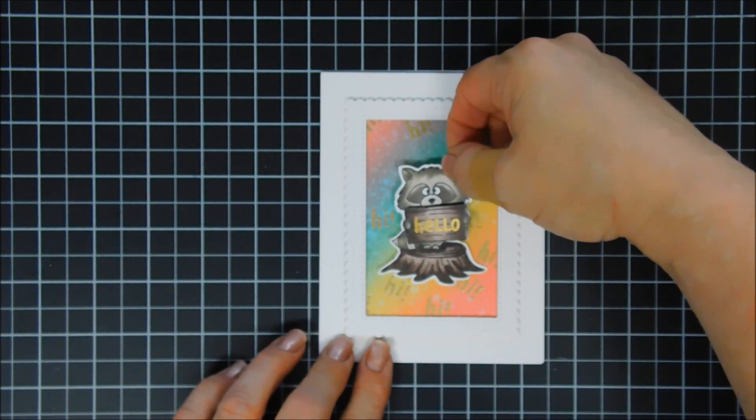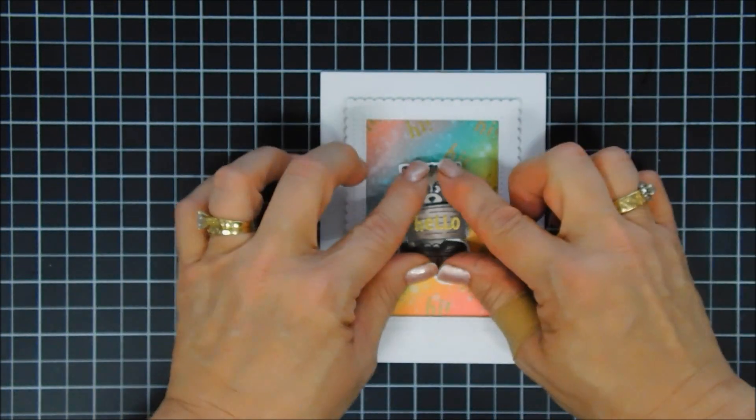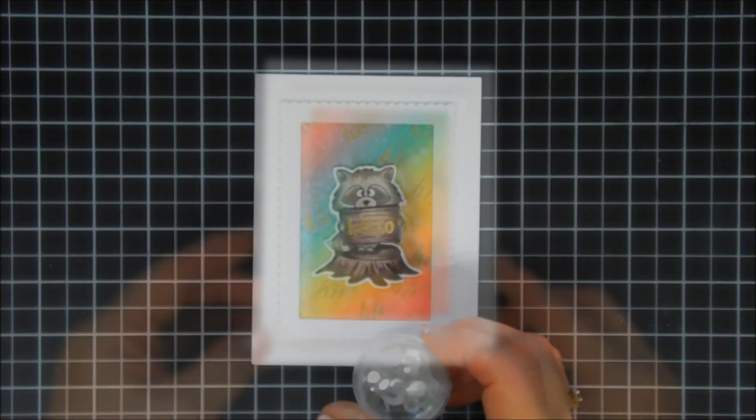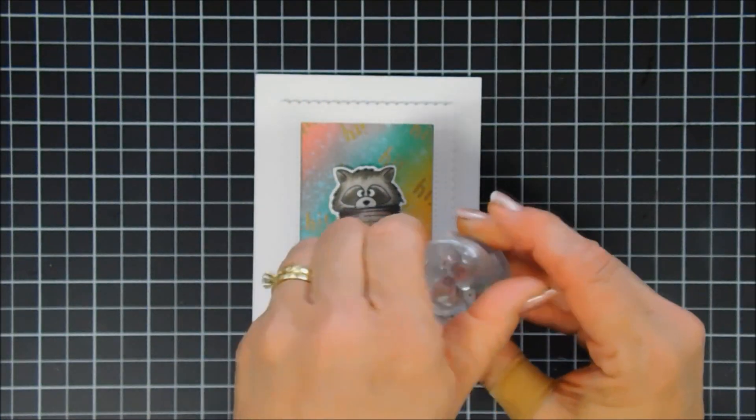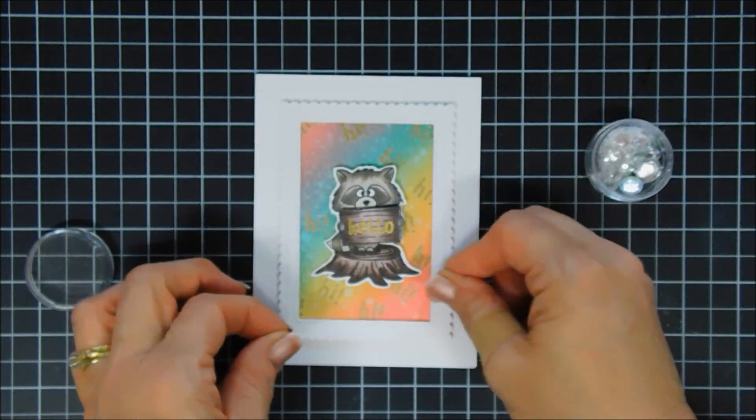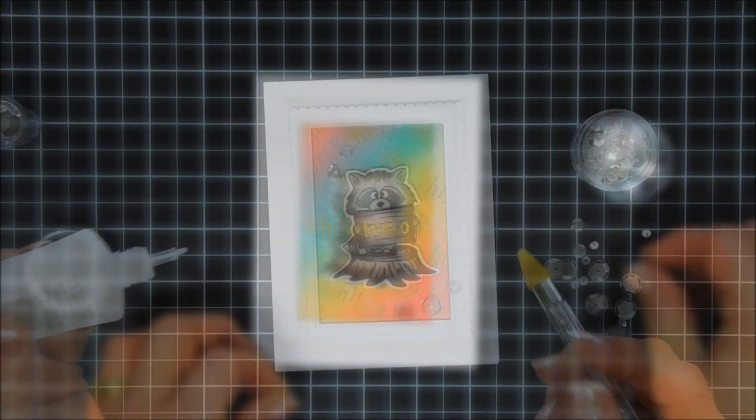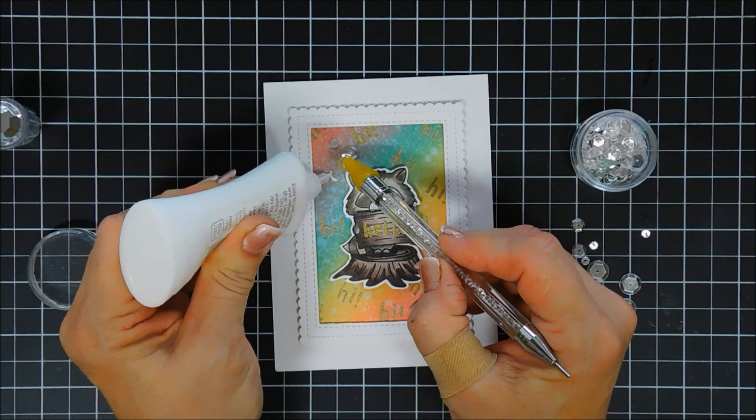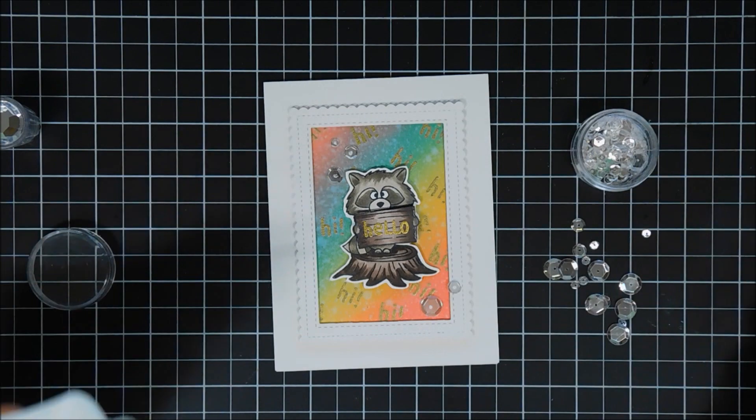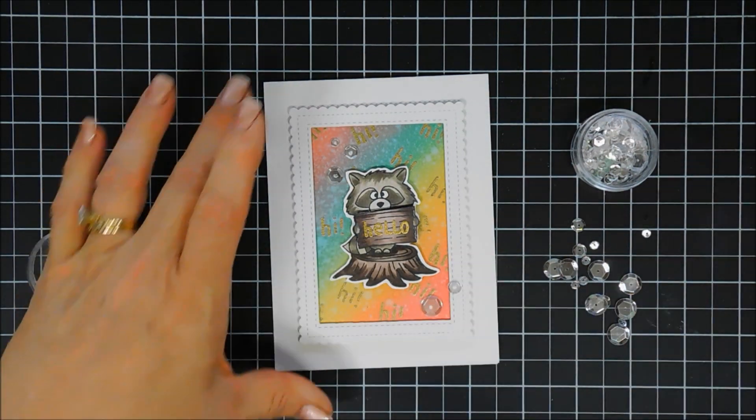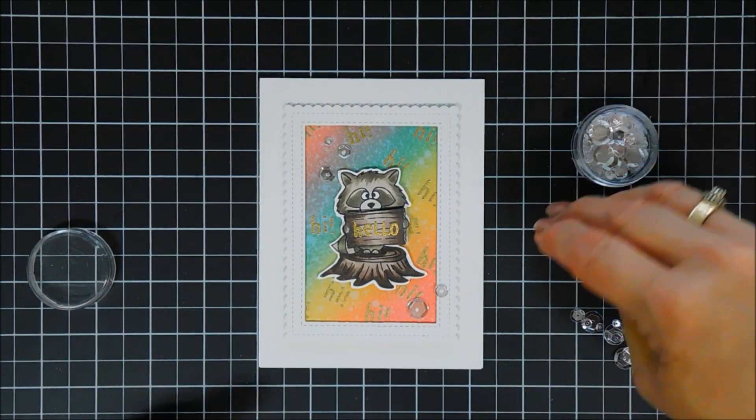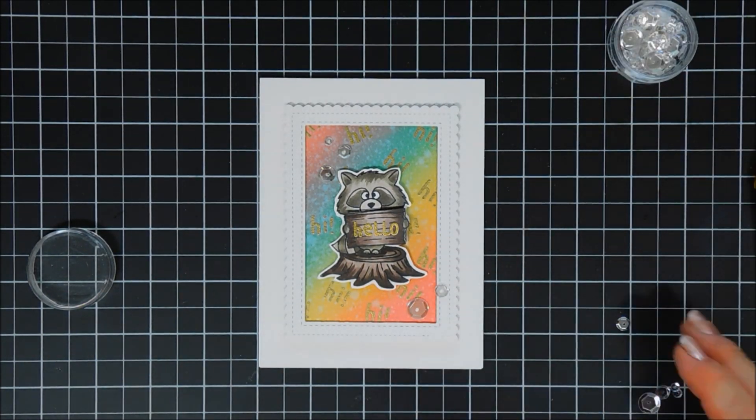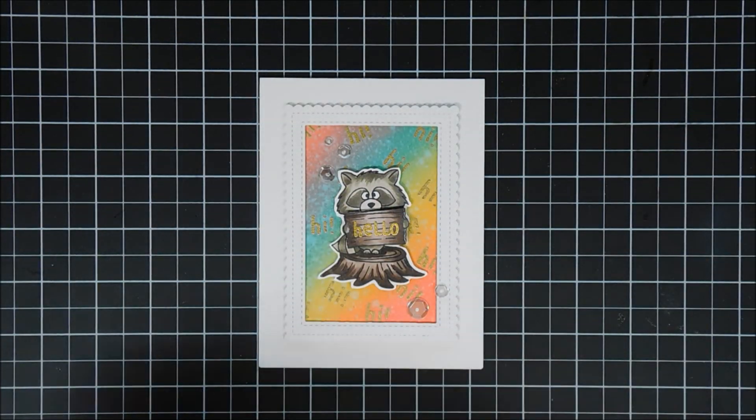We're going to add our little raccoon, place him right in the middle. And since he is predominantly brown, warm grays and brown, I think it just stands out against that white background and our colorful rainbow. Love the way this turned out. I am going to add a little bit of sparkle using some clear sequins. And then once we have that done, I'm going to take my black jelly roll pen and brighten up his little eyes a bit just so they stand out a little bit more.